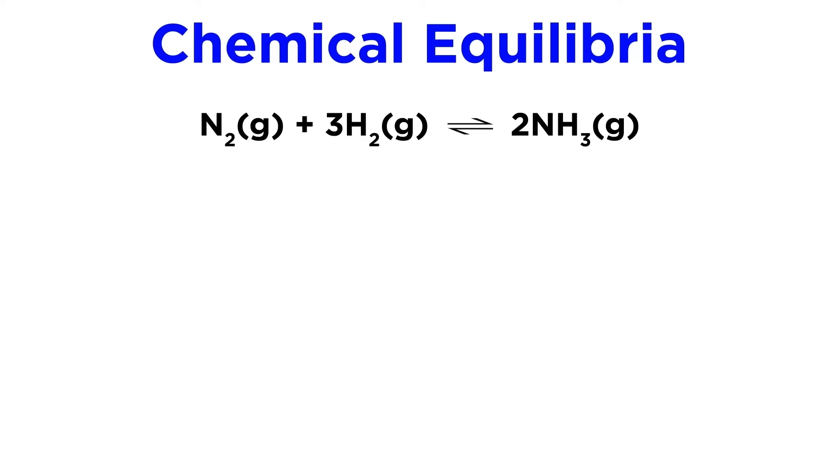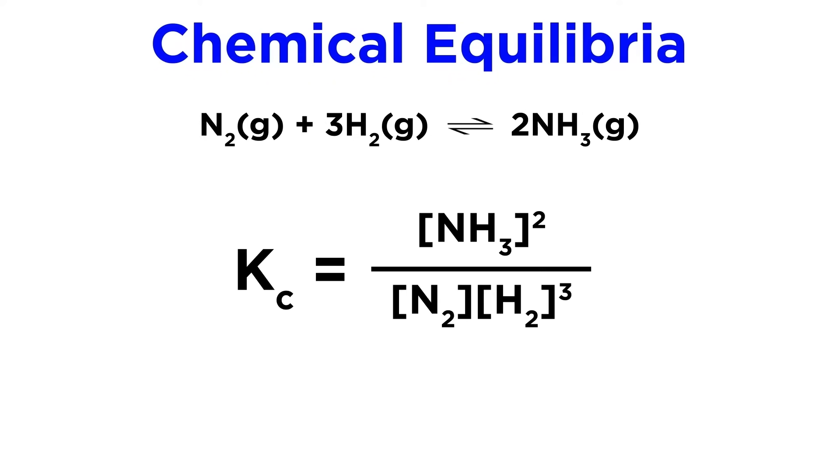Let's say we are looking at the synthesis of ammonia from nitrogen and hydrogen gas, which is a reversible process. This will occur according to this equilibrium. This means that the equilibrium expression will look like this, where the exponents on these concentration terms come from the relevant stoichiometric coefficients.